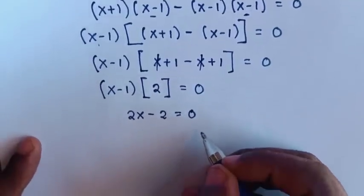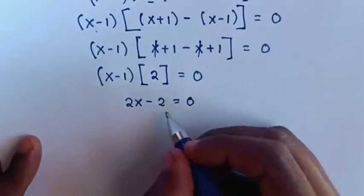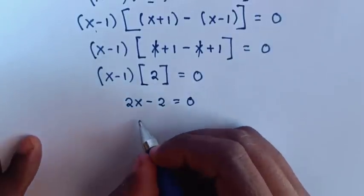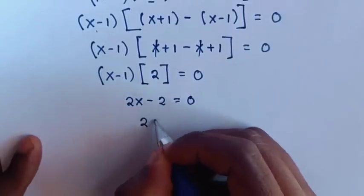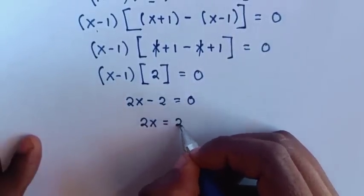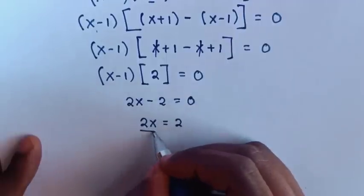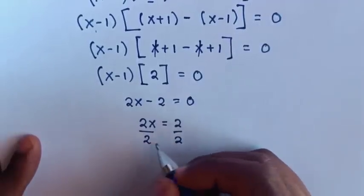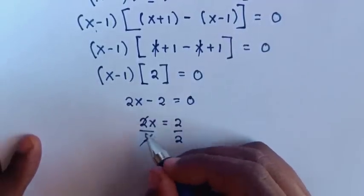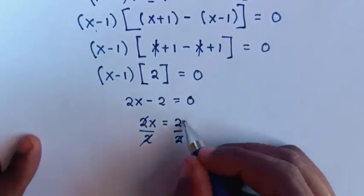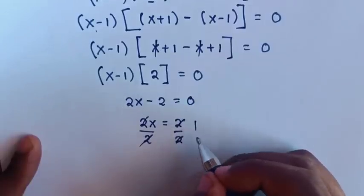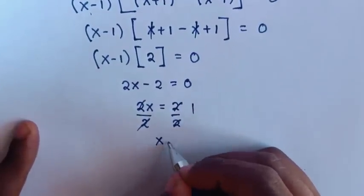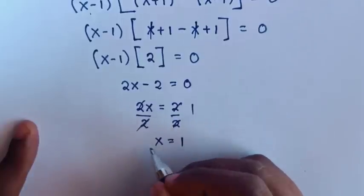Then we take negative 2 to the right side, so it will be 2x is equal to 2. Then we divide by 2 on both sides — these cancel — so x is equal to 1.